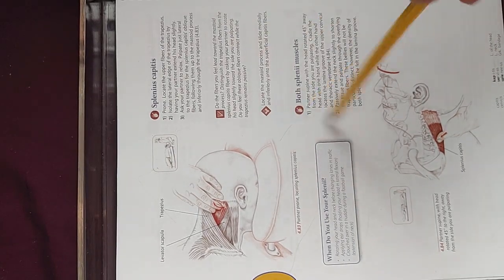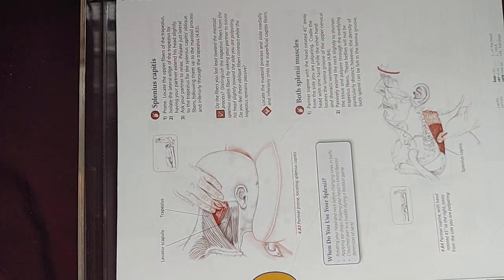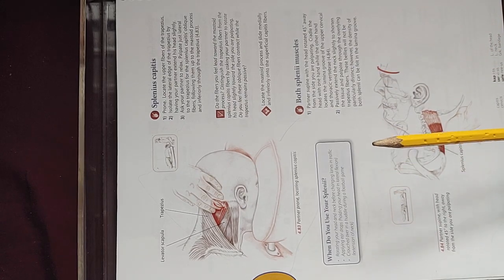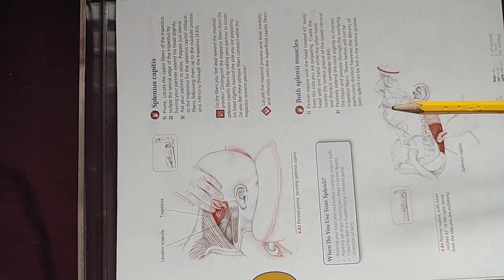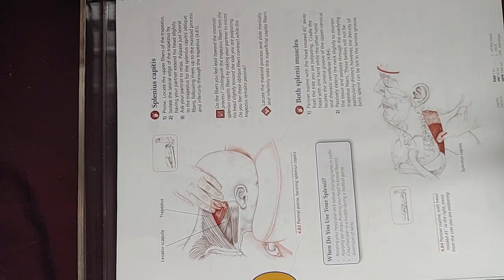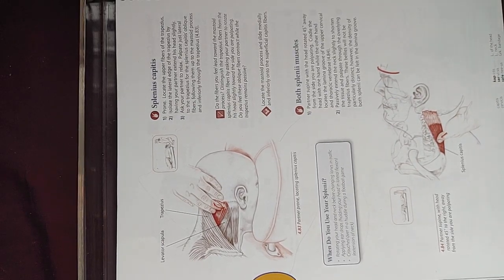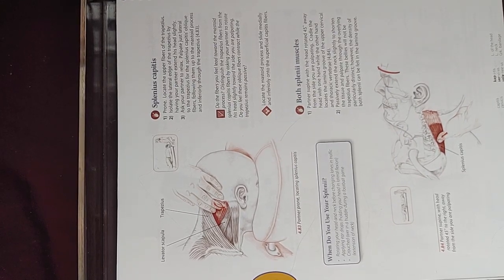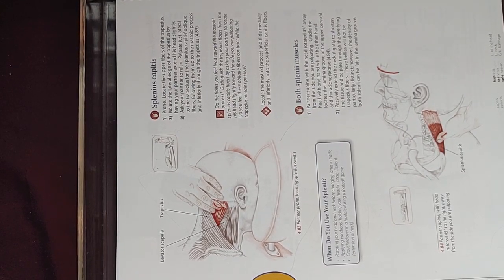Locate the mastoid process and slide medially and inferiorly onto the superficial splenius capitis fibers. Medially refers to moving toward the midline of the body, and laterally means moving away from the midline — both in reference to the anatomical positioning of the human body.